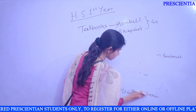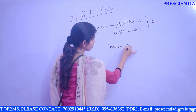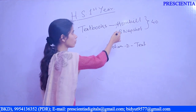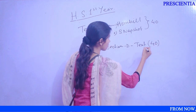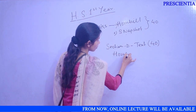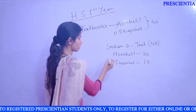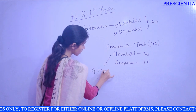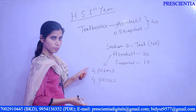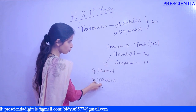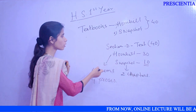Section D is the Textual section, covering 40 marks. We have already covered 50 marks up to Section C. Section D covers your two textbooks: Hornbill carries 30 marks and Snapshot carries 10 marks, totalling 40 marks. From Hornbill you have 4 poems and 4 prose pieces — 8 chapters in all. From Snapshot you have only 2 chapters.